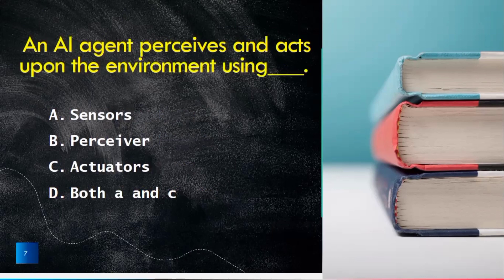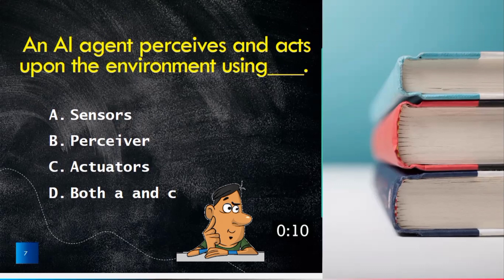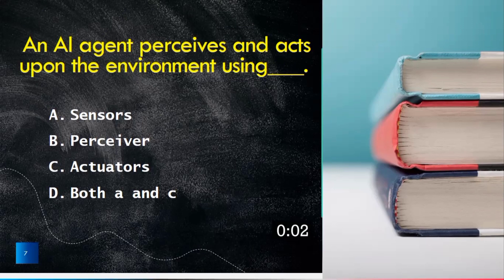An AI agent perceives and acts upon the environment using sensors, perceiver, actuator or both A and C. The true answer is both A and C.